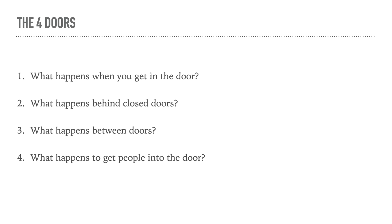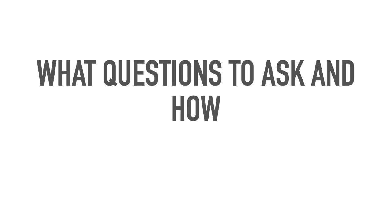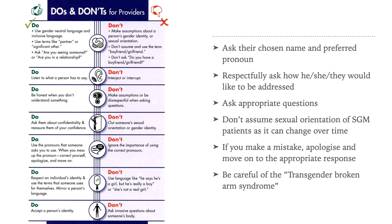Door number four: what happens to get people in the door? In other words, thinking about getting SGM people as a sought-out population to serve and have expertise in. For many healthcare providers, supporting SGM people may not only be a necessary component of providing excellent care to a broad swath of population, but also a way to grow their practice. What questions should we ask and how? This is a very important part of making a safe space for SGM patients. Always ask their chosen name and preferred pronoun. Respectfully ask how he, she, or they would like to be addressed. Only ask appropriate questions, and don't assume the sexual orientation of an SGM patient as it can change over their lifetime. If you make a mistake, apologize and swiftly move on to the appropriate response.